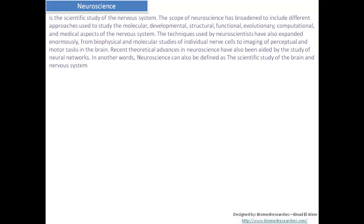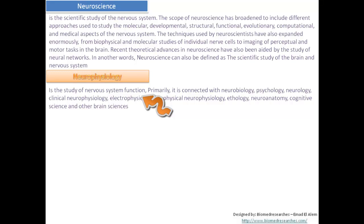In other words, neuroscience can be defined as the scientific study of the brain and the nervous system. On the other hand, neurophysiology can be defined as the study of the nervous system functions. It is primarily connected with neurobiology, psychology, neurology, clinical neurophysiology, electrophysiology, biophysical neurophysiology, ethology, neuroanatomy, cognitive study, and other brain sciences.